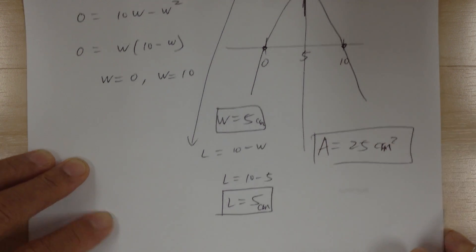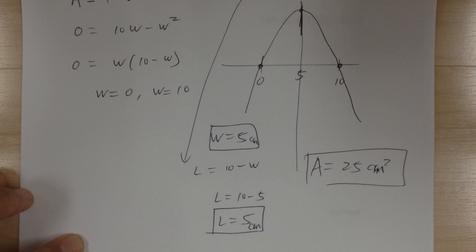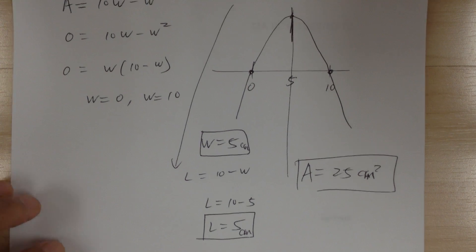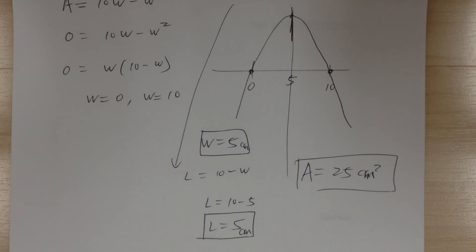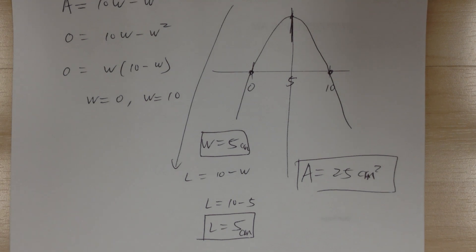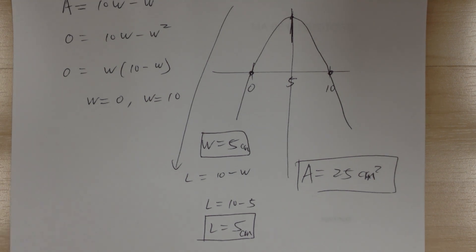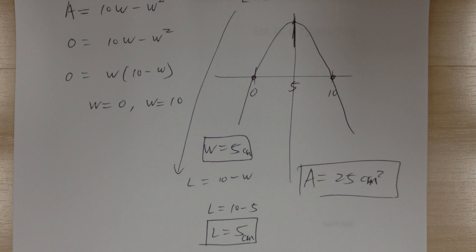This confirms that a rectangle with maximum area for a fixed perimeter is a square — a 5 by 5 square gives maximum area of 25 cm².